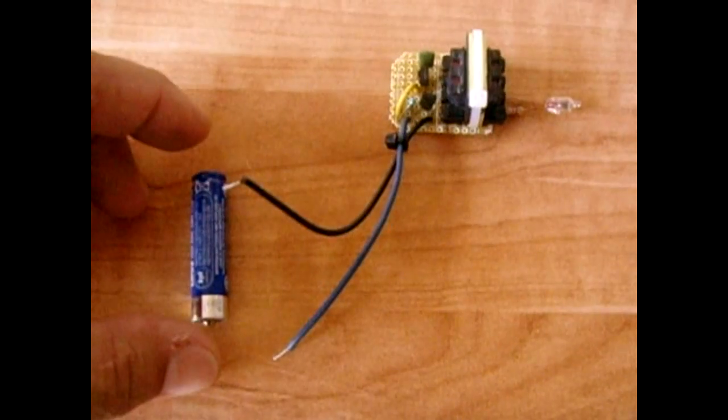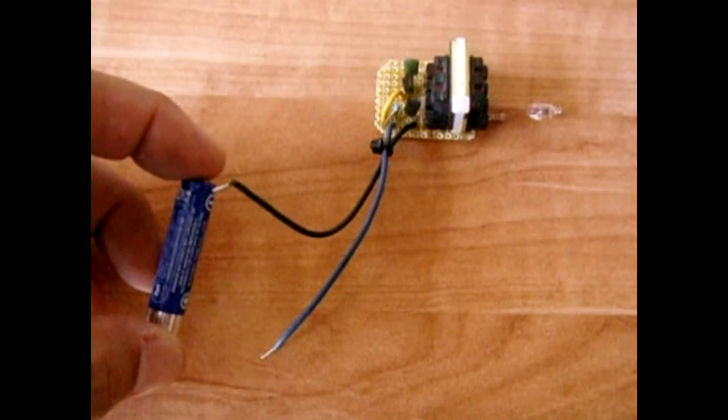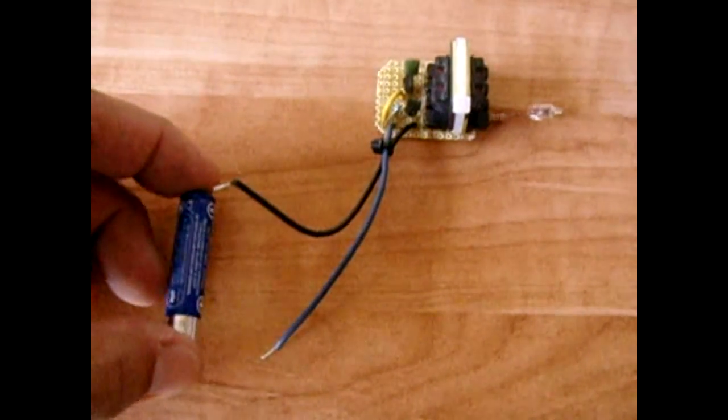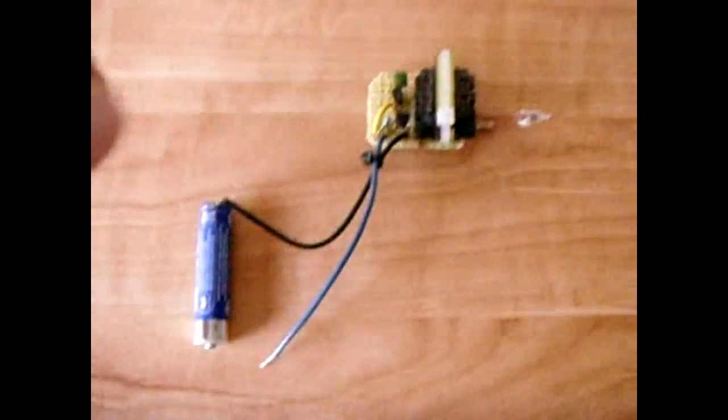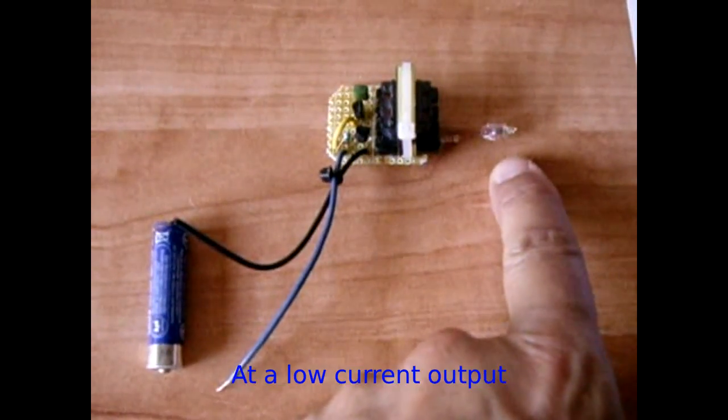In this video I'm going to show you how you can use a triple A battery or any other 1.5 volt battery or higher to produce 120 volts of alternating or pulsed DC current.